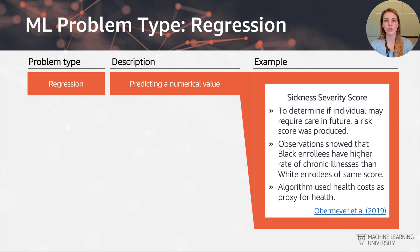Unfortunately, the algorithm they used picked up on health costs or health spending as a proxy for health. What was found by Obermeyer et al. is that different subpopulations with the same score actually had very different rates of chronic illnesses.